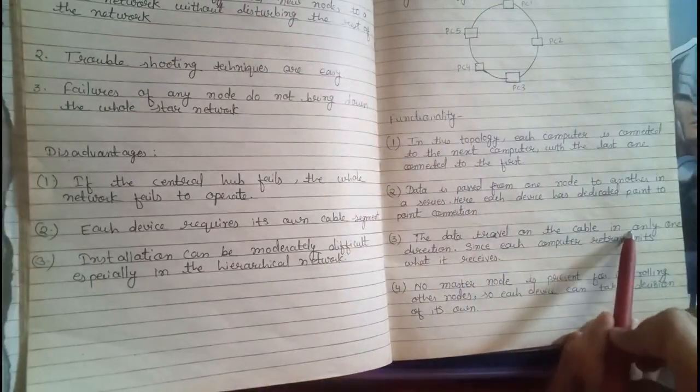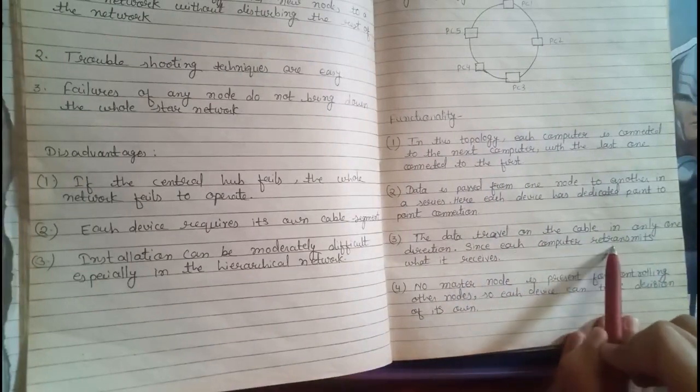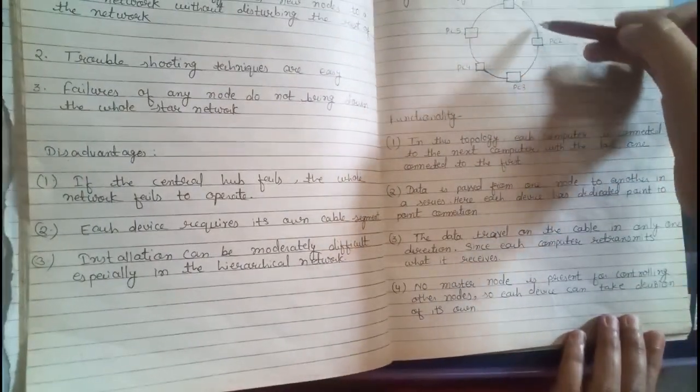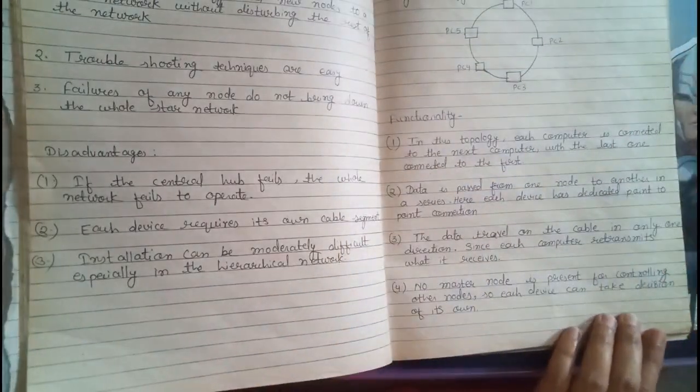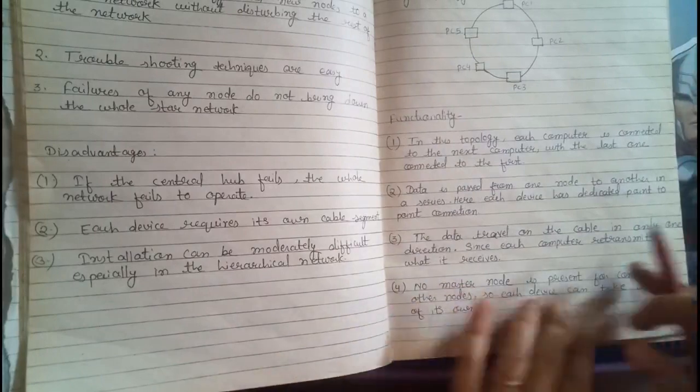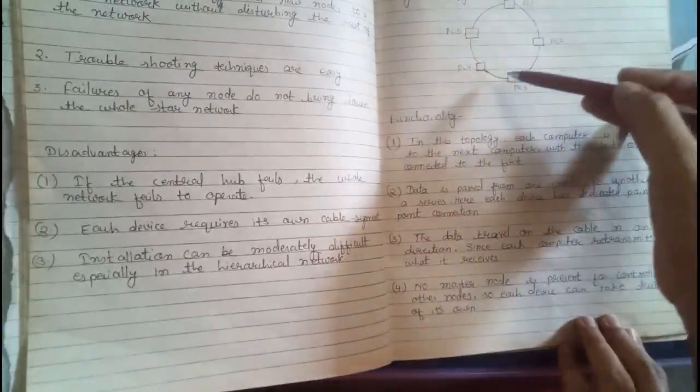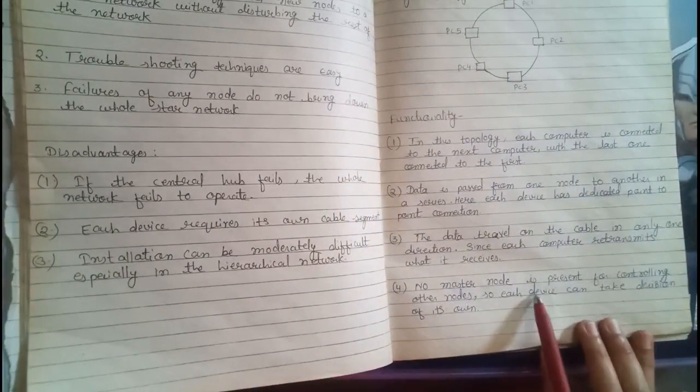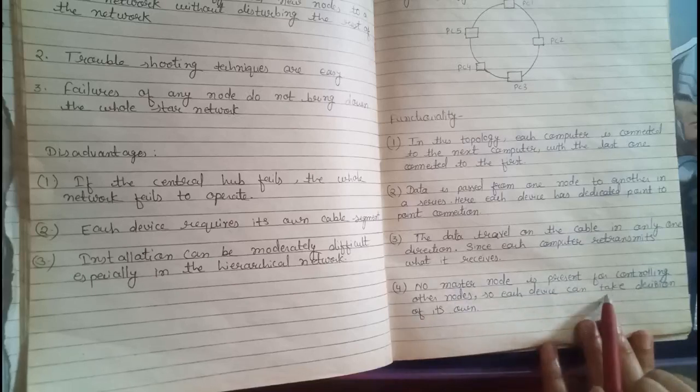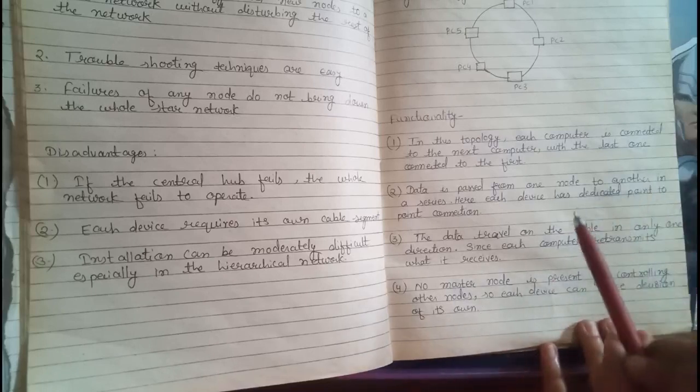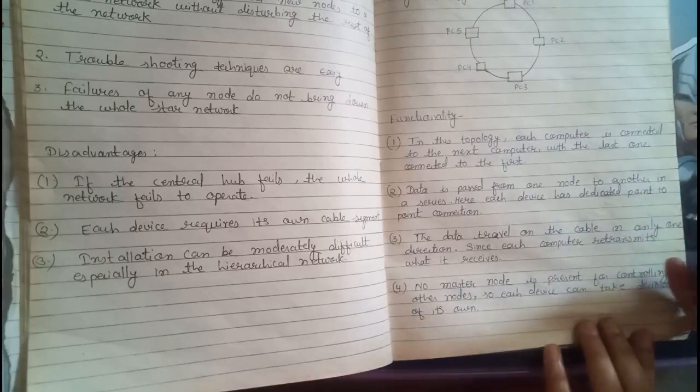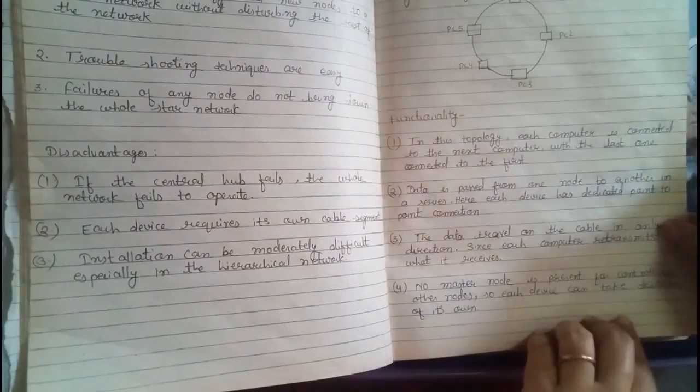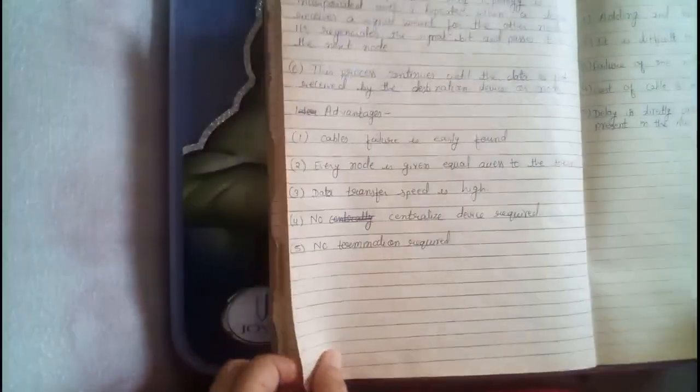The data travels on the cable in only one direction. Since each computer retransmits what it receives, data traveling in a single direction. It may be clockwise or anti-clockwise. Now, the structure that is set up in your network. At the time of building that network, we have to decide that we have to keep the direction clockwise or anti-clockwise. No master node is present for controlling other nodes. So, each device can take the decision of its own. Here, there is no master computer or server. So, every computer as a client work and as a server work. And he will take the decision of its own.